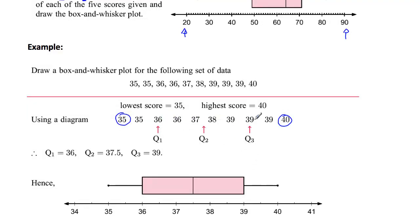Notice we've got 1, 2, 3, 4, 5, 6, 7, 8, 9, 10 scores. So n plus 1 over 2 is 10 plus 1, 11 over 2 which is equal to 5.5. So we know that the median is going to be between two numbers, 1, 2, 3, 4, 5. So there it is in there, the median. We average 37 and 38, 37.5 and along this line we mark that. And then of course we've got to look at these numbers here.